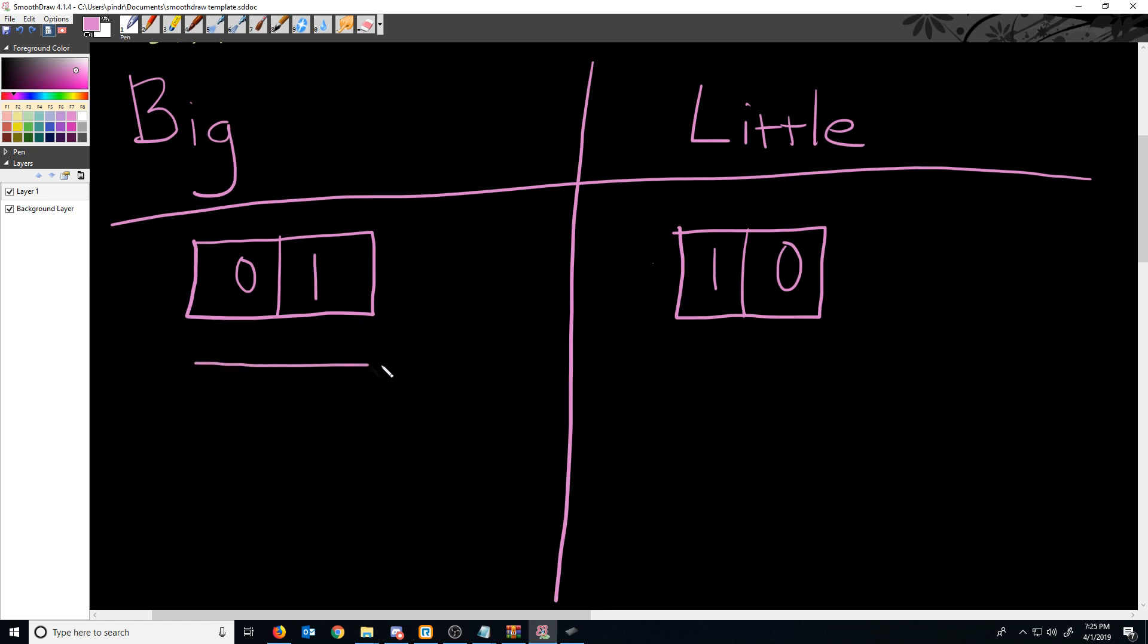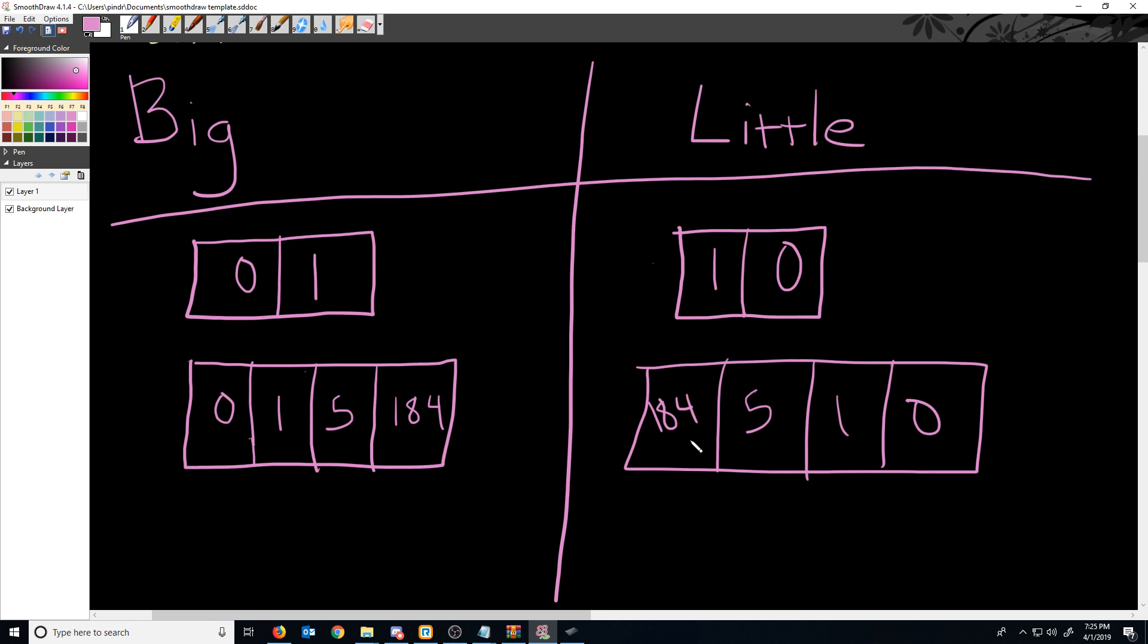Let's look at the four byte example that we did. And as you can see, our Little Endian example is just the Big Endian example, but with the bytes all reversed.